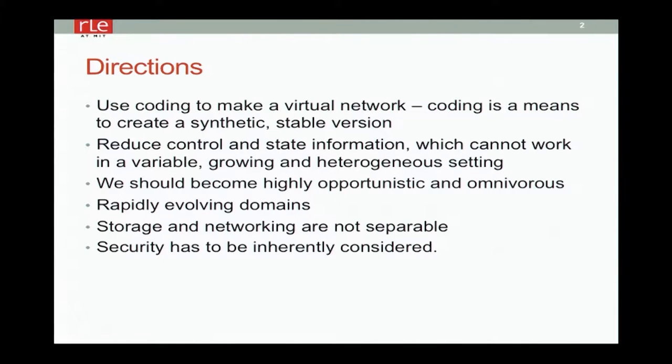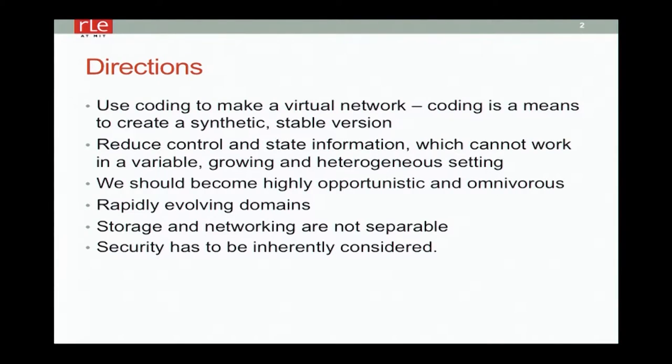If you think of what you do in coding when you have a point-to-point link, you have several symbols, each of which individually is not particularly good. You use algebraic techniques to combine them so that they look good — you're really creating a virtual network, something synthetically reliable from unreliable pieces. I would also propose that we should reduce control and state information. Are you really going to keep all these different connections separate and track all of that in a heterogeneous setting?